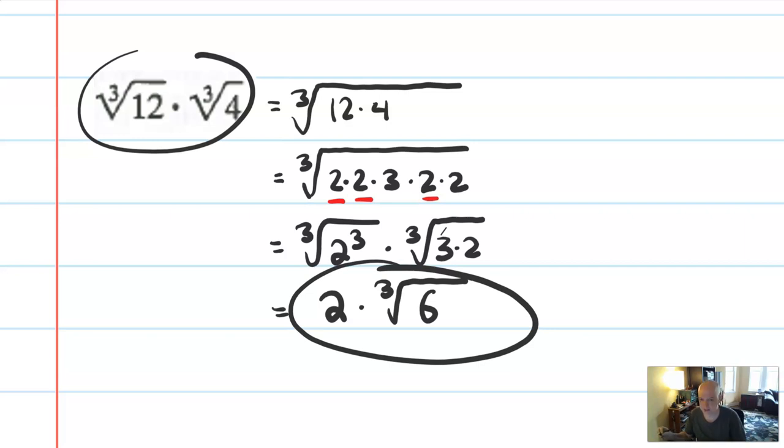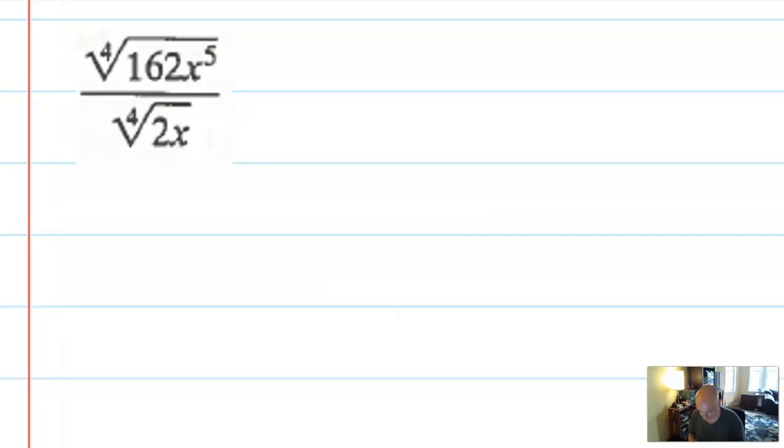So this should simplify to 2 cube root of 6. And of course, there's a lot of other ways to approach that, but I think that's a pretty good one. And I believe this is our last problem here. So I'm doing some fourth roots. I am going to want to combine these all up into the fourth root of this big thing, 162x to the 5th over 2x. So that's legal.